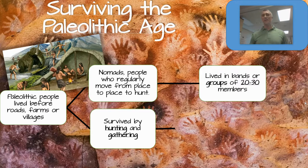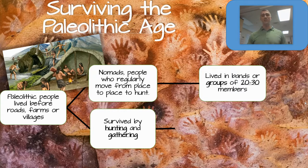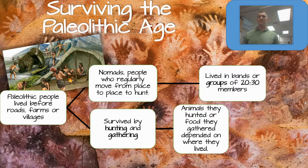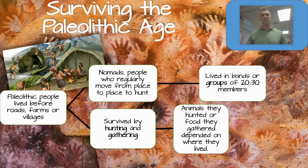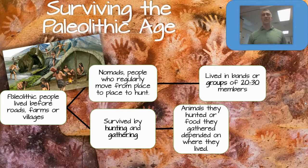Usually they would live in small bands of around 20 to 30 members. They had to be careful not to let these bands get too large — it would be difficult to feed everyone if you had hundreds of people in your nomadic band. The animals they hunted or the food they gathered really depended on where they lived and the time of year. In winter, it's going to be harder to find certain food sources and hunt certain animals, really depending on whether you live in the mountains or a hot environment.